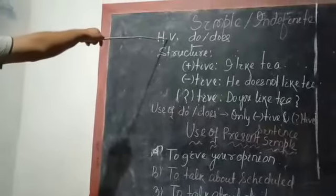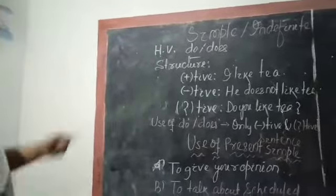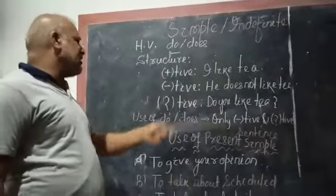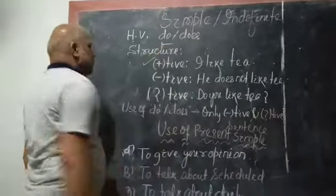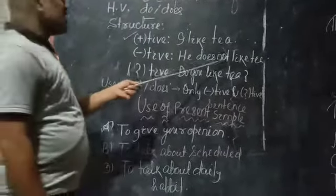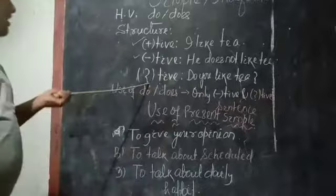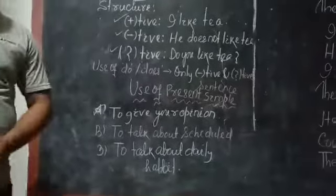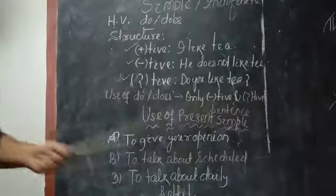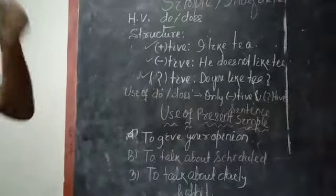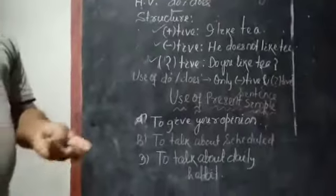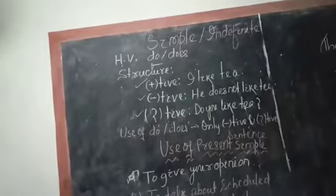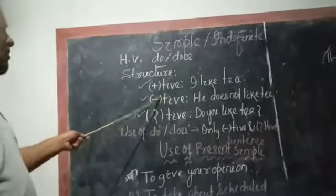Come to the topic. Simply or indefinite. Helping verb: do, does. Structure: Positive - I like tea. Negative - He does not like tea. Interrogative - Do you like tea? This is what each sentence has at least three structures. Positive, negative, interrogative. These three structures is the basic structure in English.